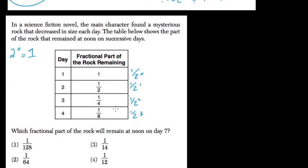Notice the exponent is always 1 less than the day. So for the nth day, our formula is 1 over 2 to the n minus 1.